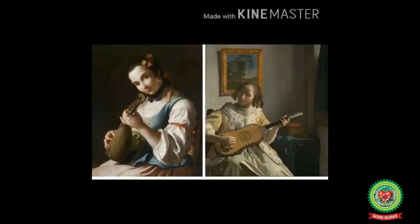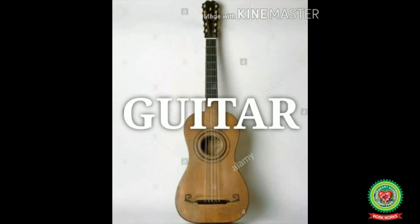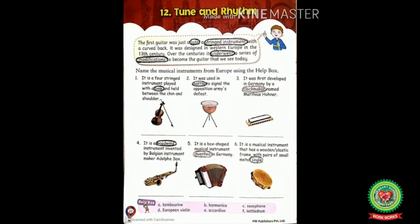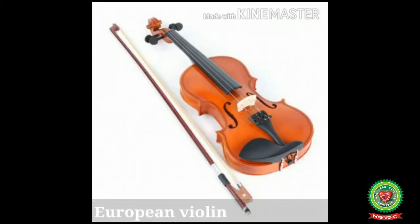A lute was designed in Western Europe in the 13th century. It used to have a round back and a flat top with strings. After modifying it, the first guitar was made, which was just a lute with a curved back. Now let's discuss some more musical instruments from Europe.